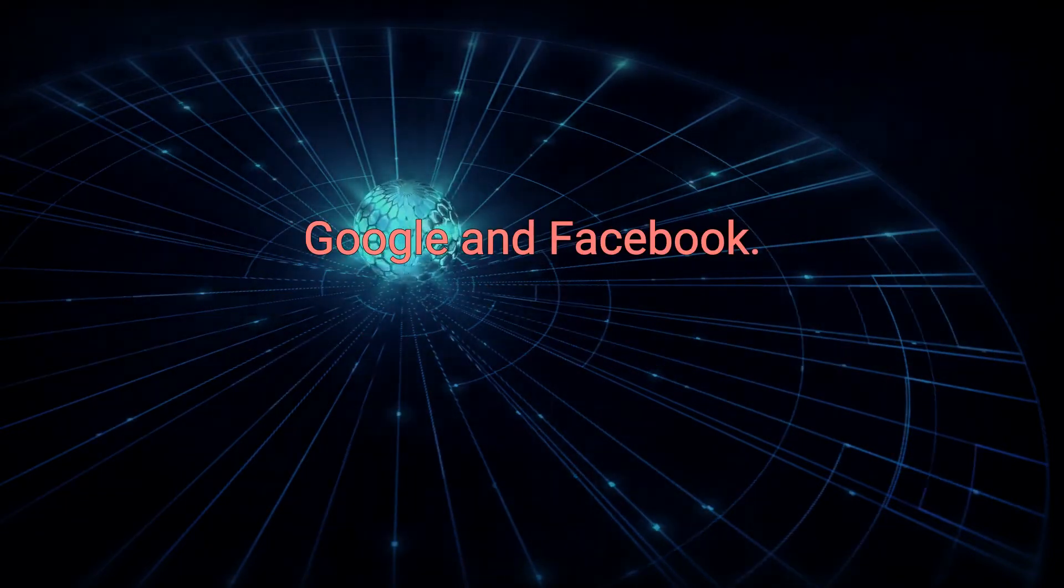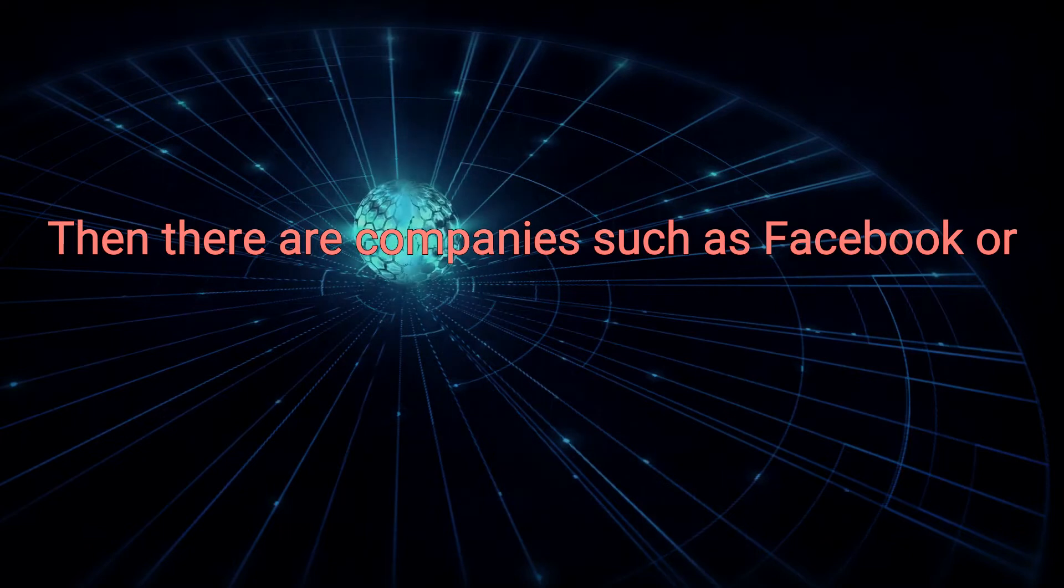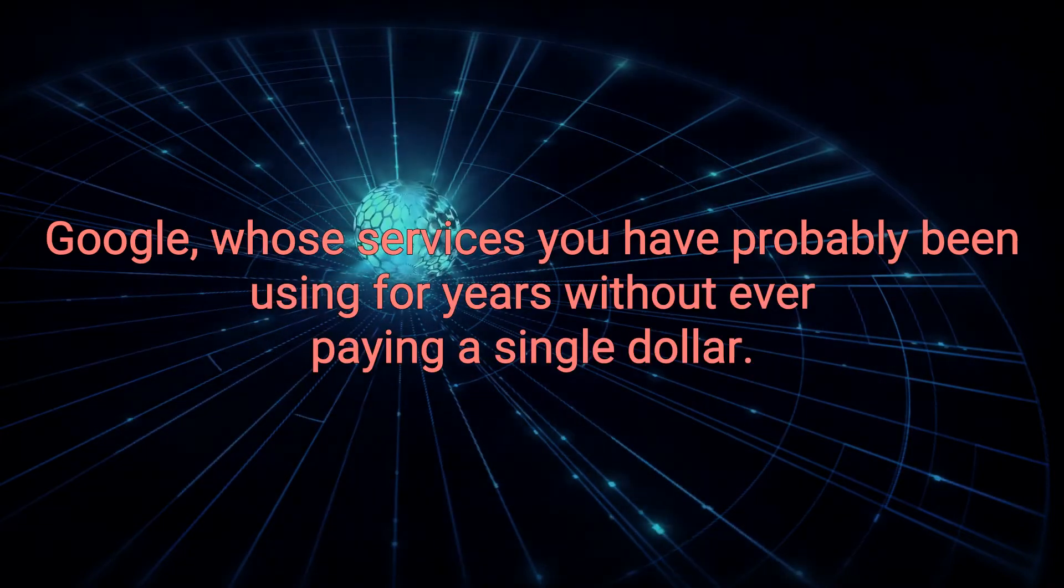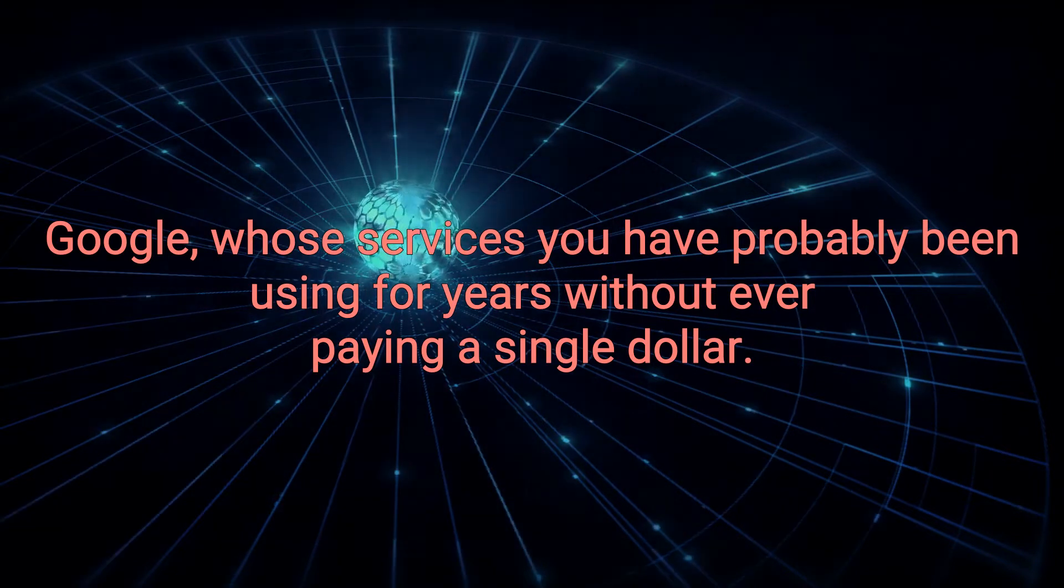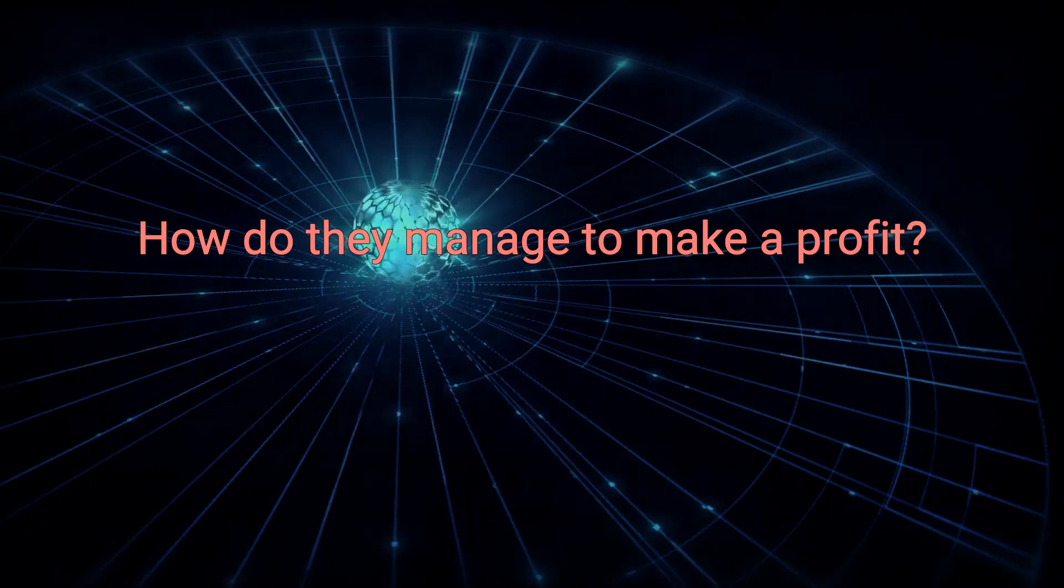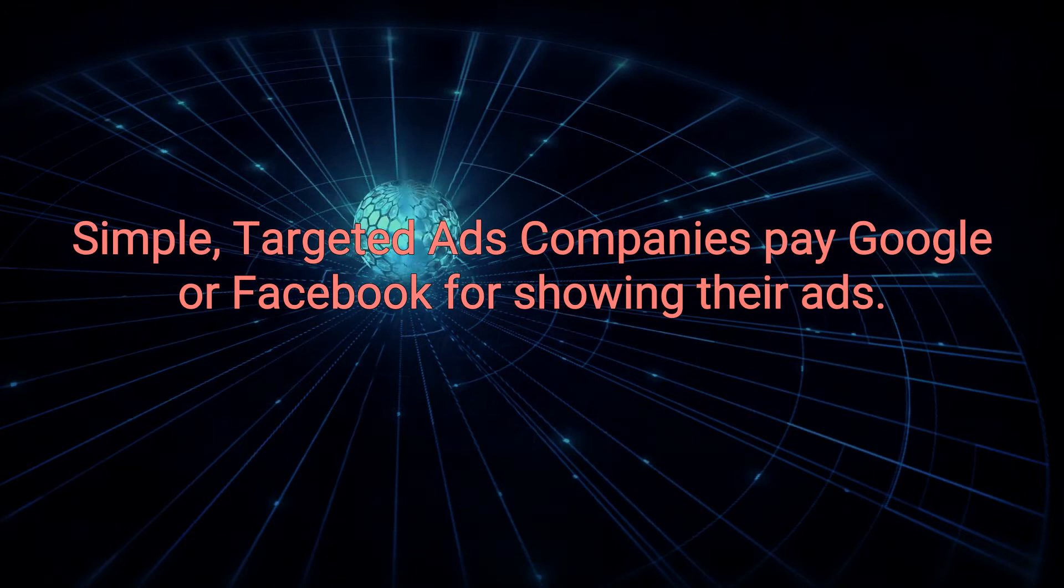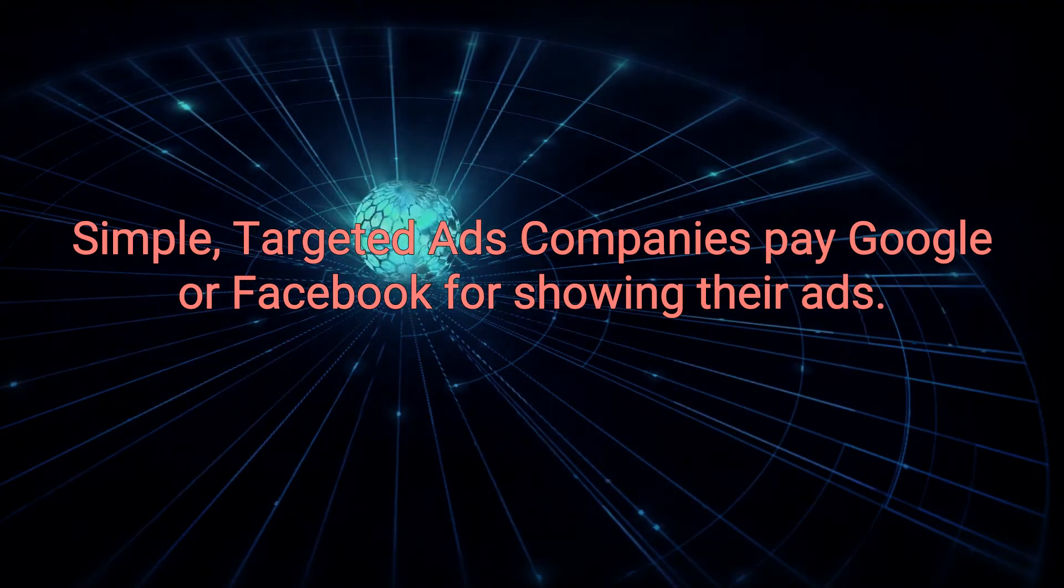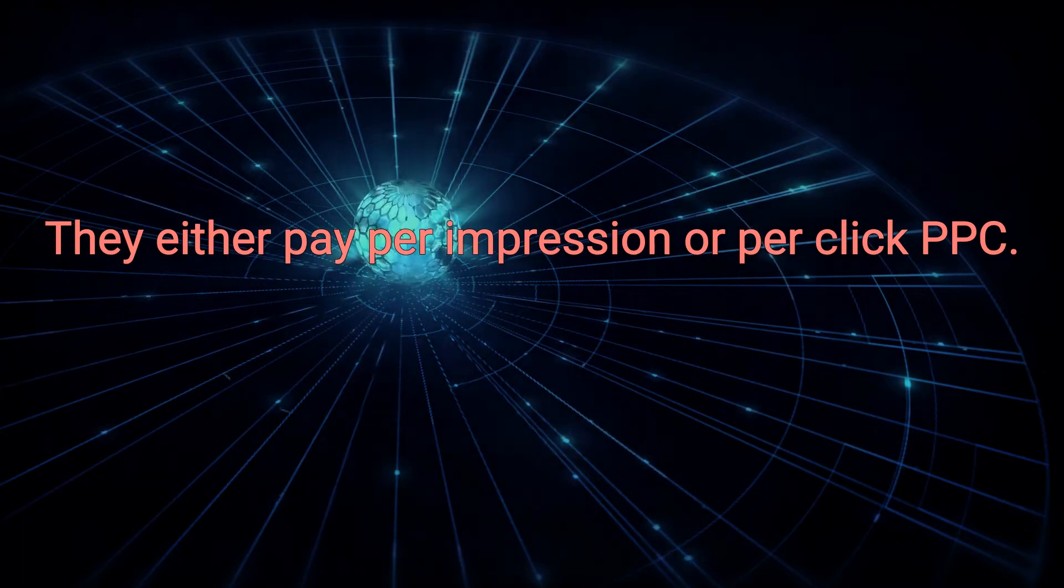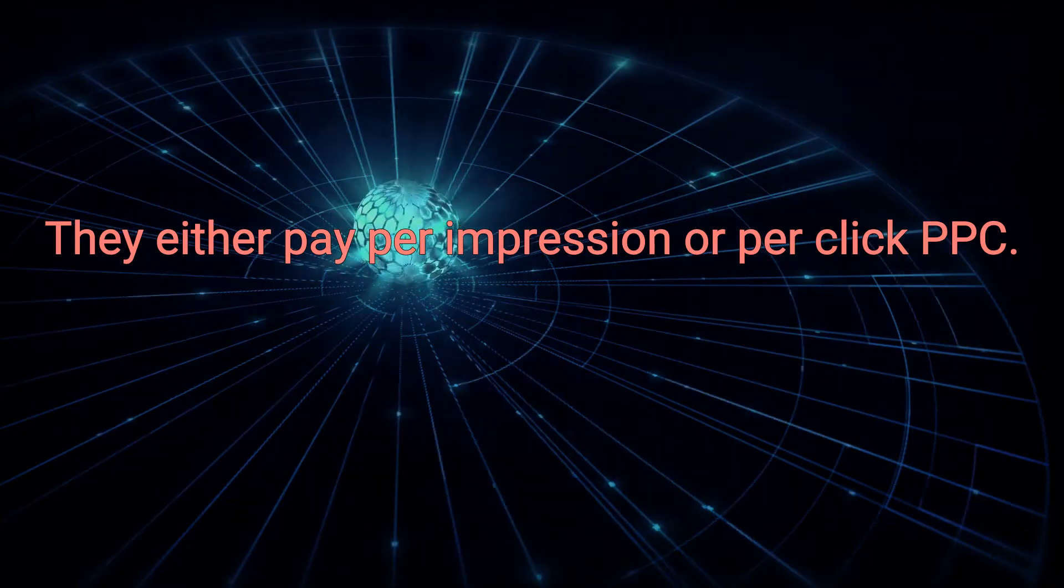Google and Facebook. Then there are companies such as Facebook or Google, whose services you have probably been using for years without ever paying a single dollar. How do they manage to make a profit? Simple. Targeted ads. Companies pay Google or Facebook for showing their ads. They either pay per impression, PPI, or per click, PPC.